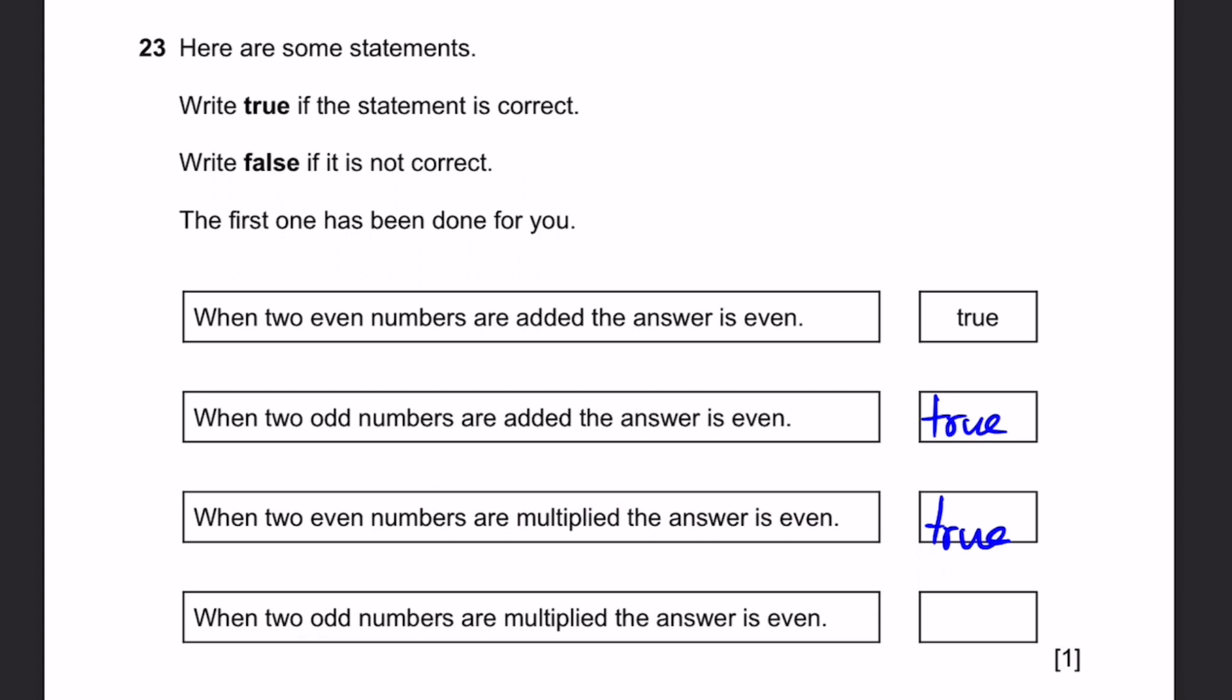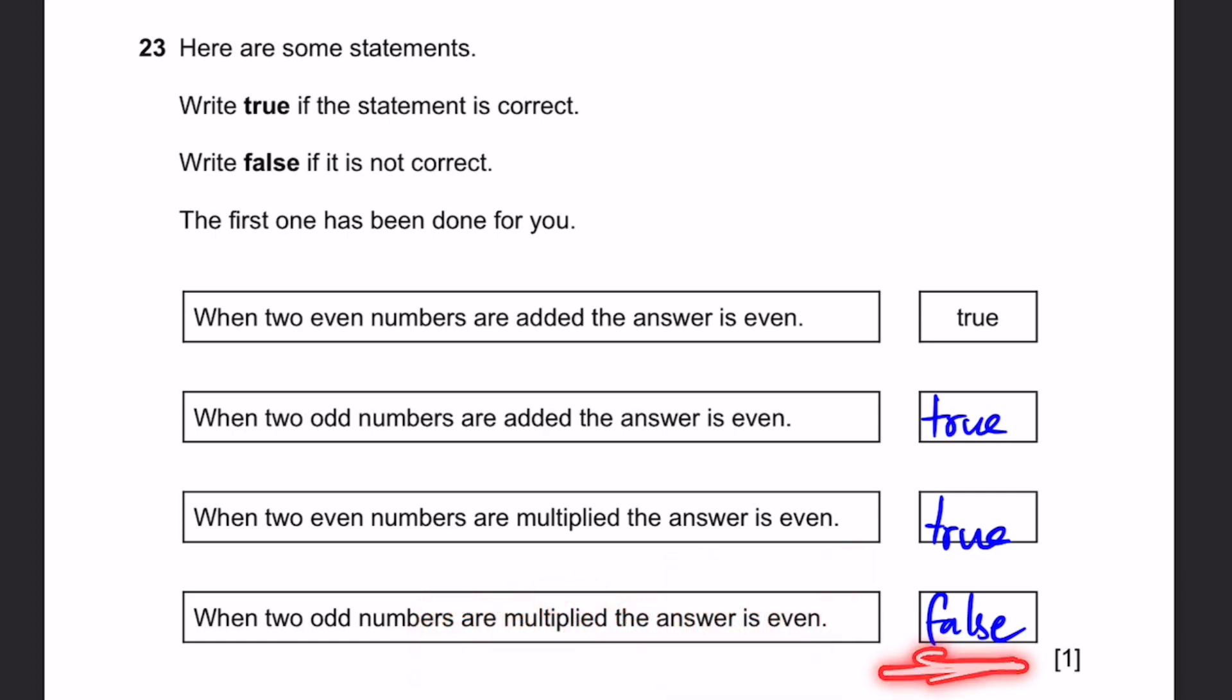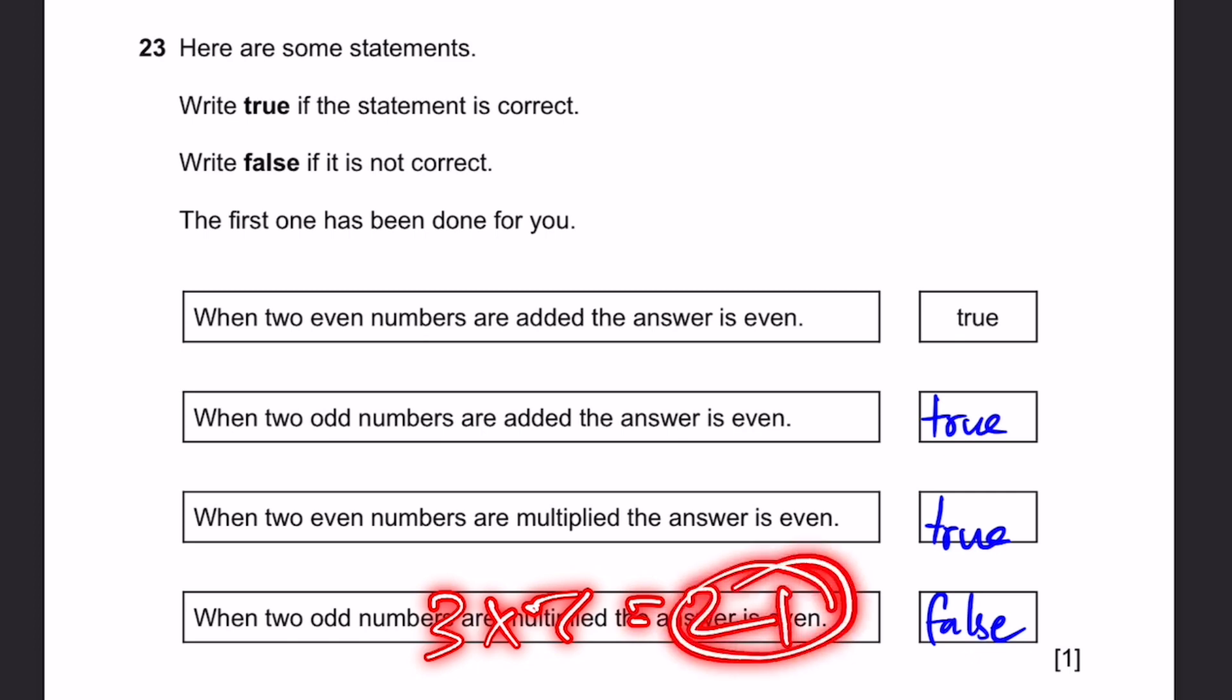When two odd numbers are multiplied, the answer is even. Finally, we get a false, because when we take 5 into 7, we get 35, it is odd. Just one example is enough to prove it's false. You can try other numbers, for example 3 into 7, 21, that's also odd.